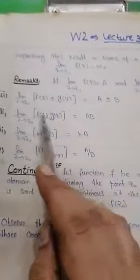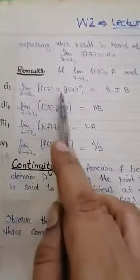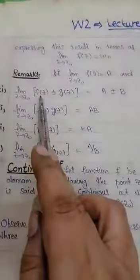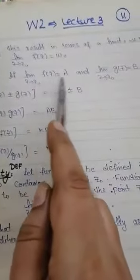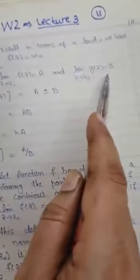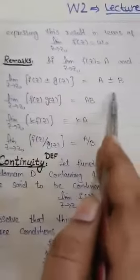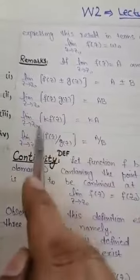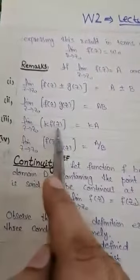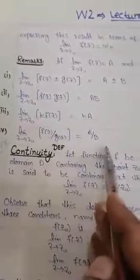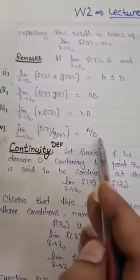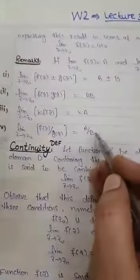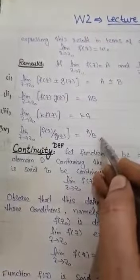After this, there are some remarks: if limit of f(z) = a and limit of g(z) = b, then the limit of f(z) ± g(z) = a ± b, limit of f(z)·g(z) = a·b, and limit of a constant times f(z) equals the constant times a. These are different limit formulas that you should remember. We will continue in the next lecture.